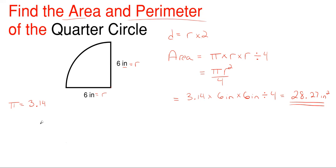Now let's work on the perimeter. The perimeter for a quarter circle is a combination of the circumference of the main circle and the radius. The circumference is all the way around the outer edge, but we only care about the portion that is one quarter of the entire circle — that's why we call it a quarter circle.